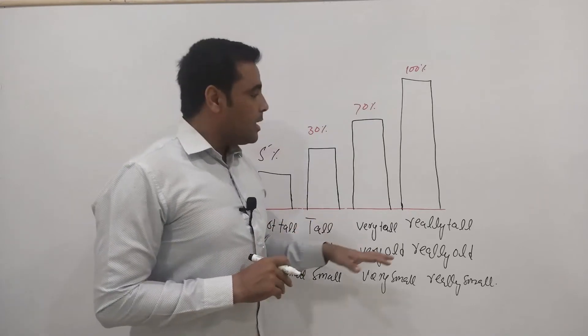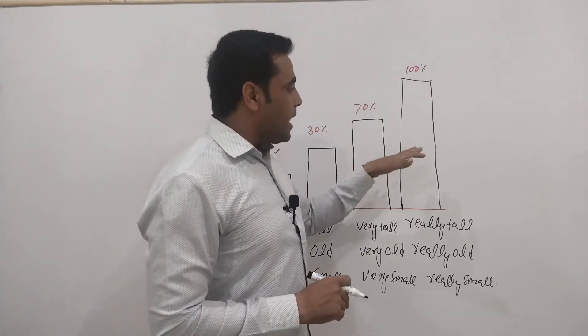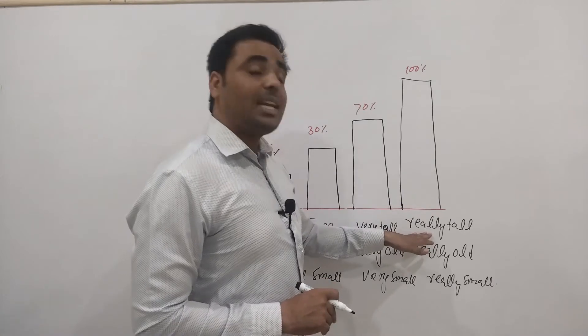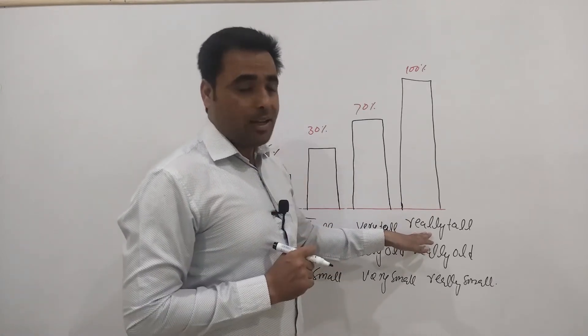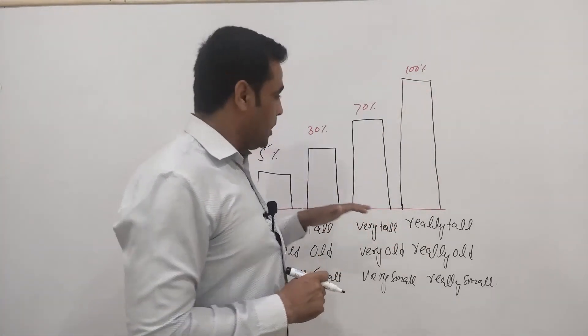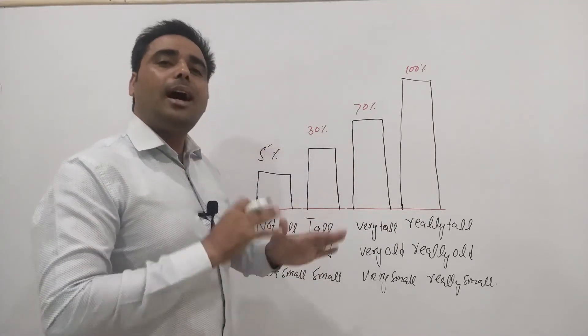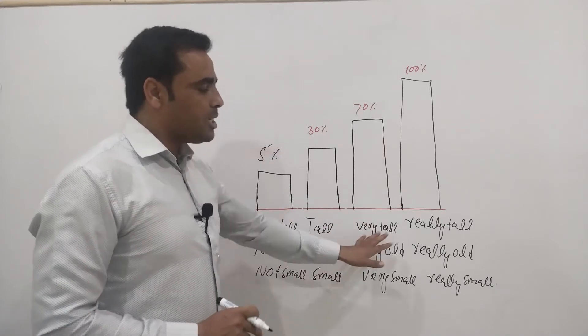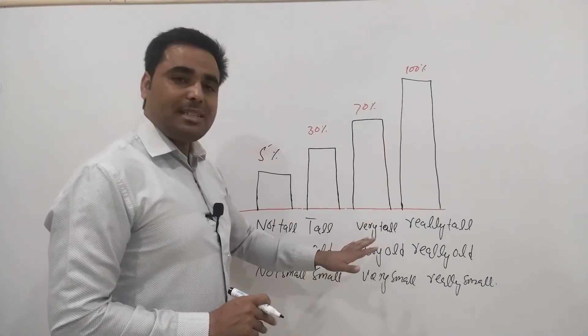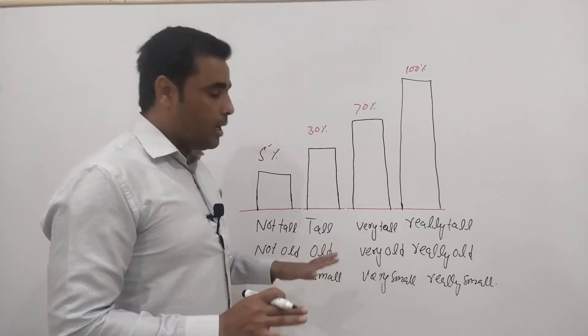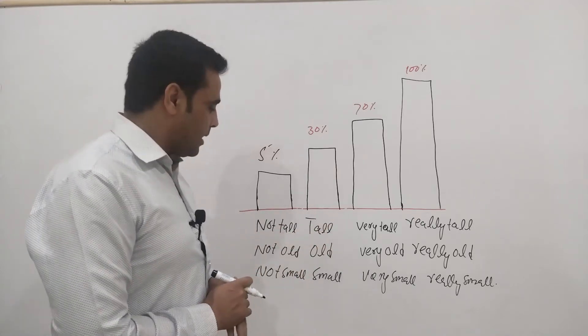Then the tallest building, for this we will use really tall. This is 100%. So percentage-wise when we divide it, this is an easy way to understand it.